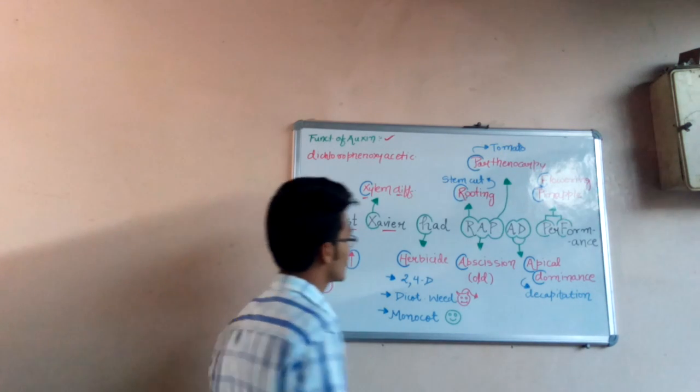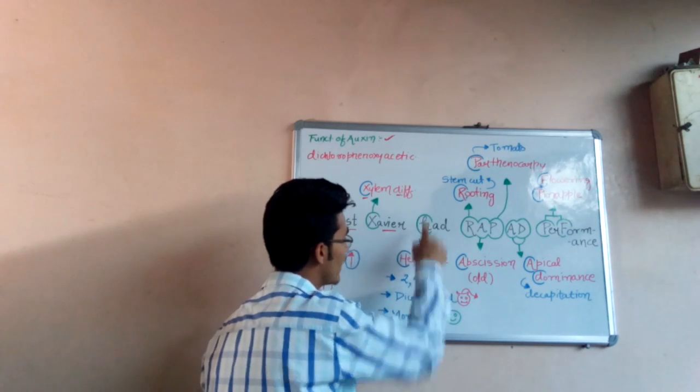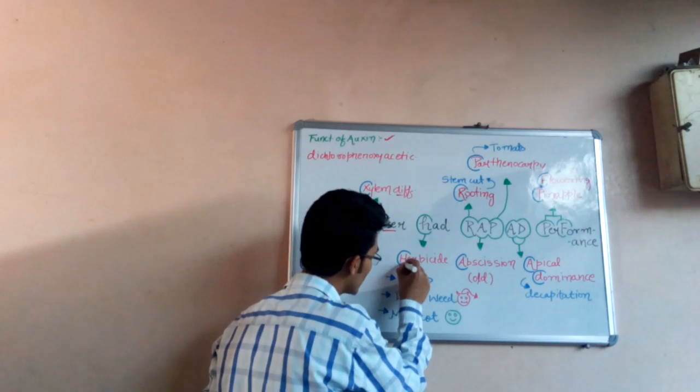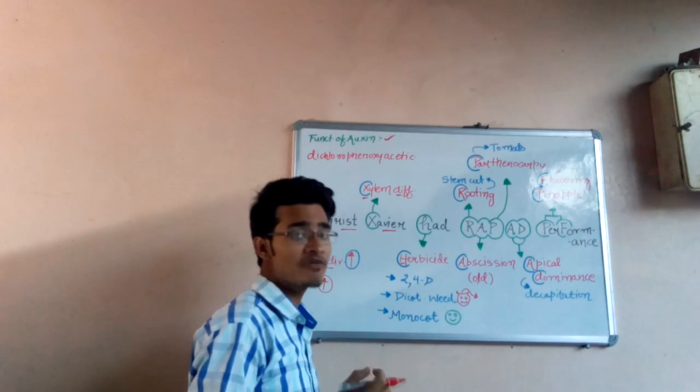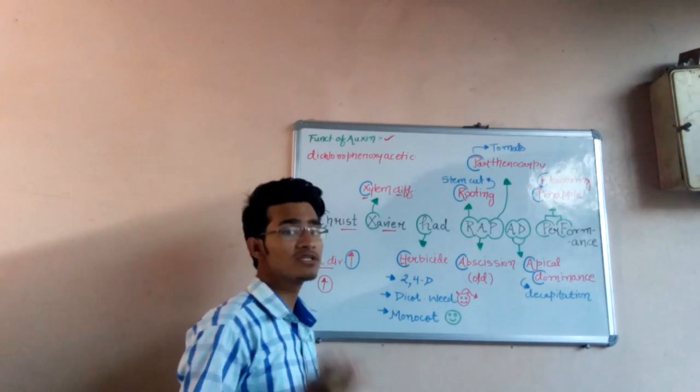The next one, H, simply means herbicides. Herbicides or weedicides are those chemicals which kill herbs or weeds respectively.